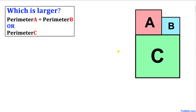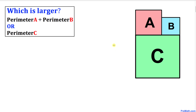Welcome to pre-math. In this video tutorial we have got three squares A, B, and C as you can see in this figure. Here's our question: which one is larger — either the perimeter A plus the perimeter B, or just the perimeter C? Let's go ahead and get started with the solution.